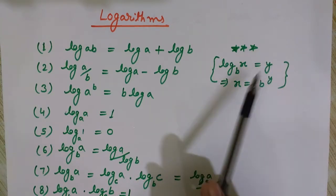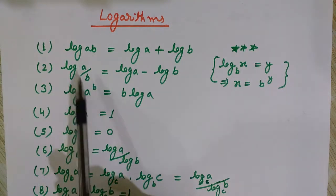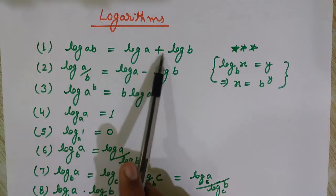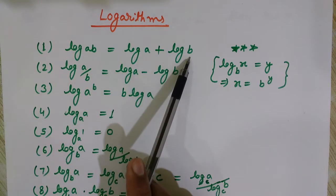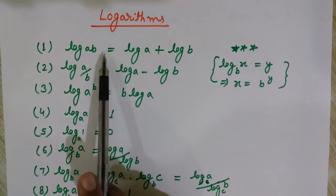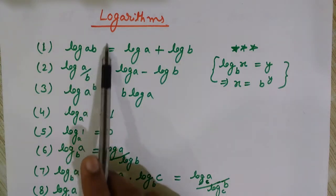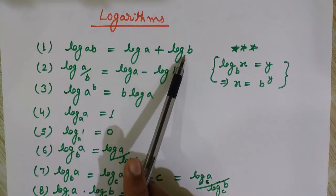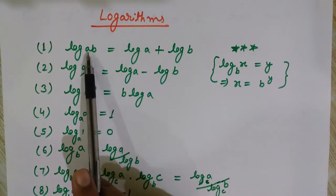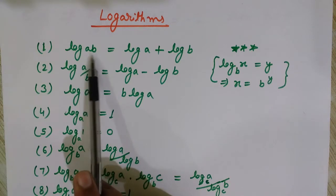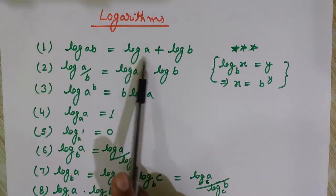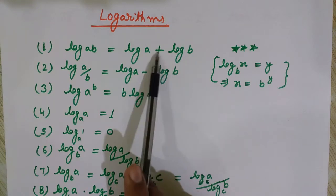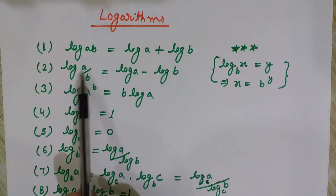Now let's see other formulas of logs. Log of a into b is equals to log of a plus log of b. Here you can see that we have changed this multiplication — this product — into an addition operation. So if we want to find the logarithm of a into b, we can simply find the log of a and log of b and then add them together.